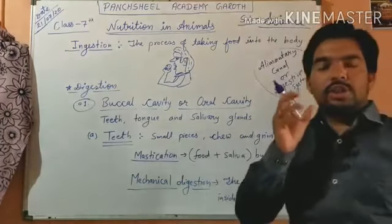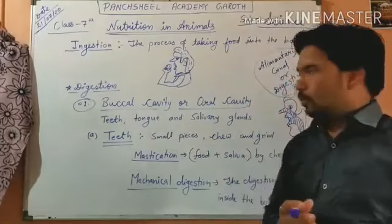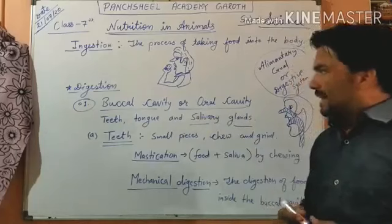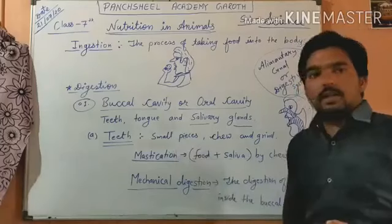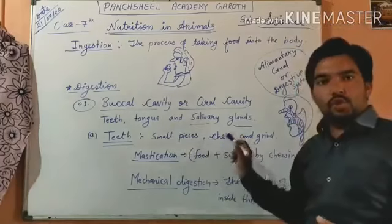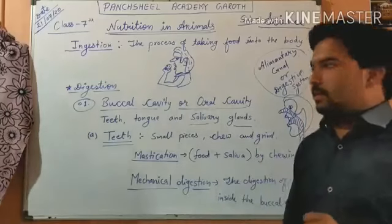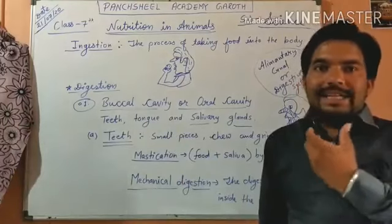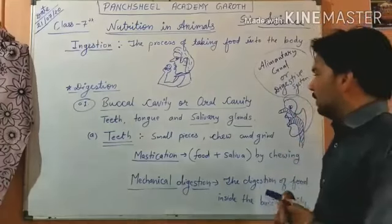In the buccal cavity we have teeth for chewing and grinding food, a tongue for adjusting the food, and salivary glands — an important part for digestion. Teeth can break food into small pieces; we chew and grind it. The tongue helps adjust food between the teeth and mixes saliva with the food.